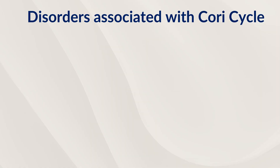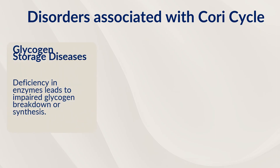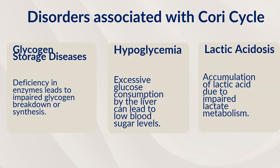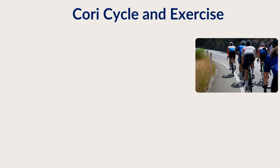There are a number of disorders associated with the Cori cycle. These include glycogen storage disease, hypoglycemia, and lactic acidosis. One specific condition is Cori disease, which is glycogen storage disease type 3 — a rare hereditary disorder that affects the degradation of glycogen. Lactic acidosis involves the accumulation of lactic acid in the body, resulting from causes such as reduced oxygen transport, mitochondrial malfunction, and other factors. Hypoglycemia is also among the disorders associated with the Cori cycle.